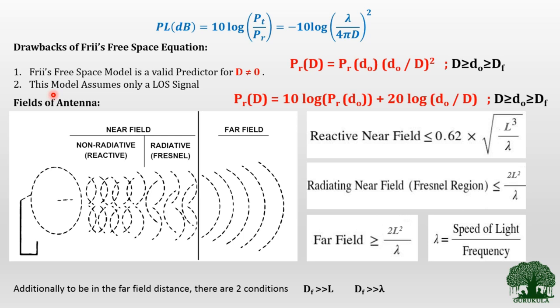The second drawback is that this model assumes only a line-of-sight signal. In practical situations, we will have multipath components as well — meaning we receive multiple copies of reflected signals at different time periods. For this, there is another model which overcomes this drawback: the two-ray model, or ground reflection model. In that model, both the line-of-sight signal and the reflected signal are considered, which is more realistic compared to the free space path loss model.